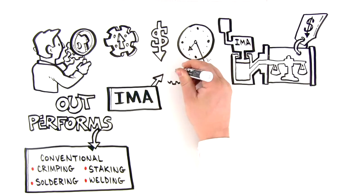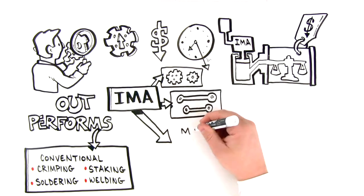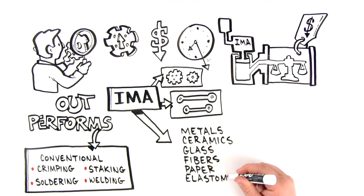IMA is well-suited for assembly components of different shapes, sizes, and materials, including metals, ceramics, glass, fibers, paper, elastomers, and plastics.